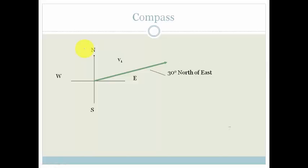So, for example, this vector one we could say is 30 degrees north of east. We could have also said that it was 60 degrees east of north. But we always go from the side that it's closest to. So, this is 30 degrees north of east.